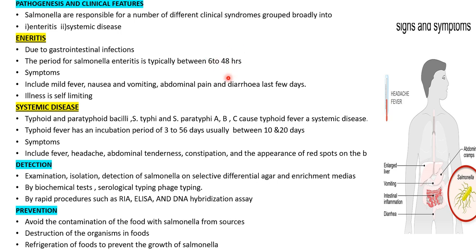Symptoms of enteritis include mild fever — which is the body's first defense indication — nausea, vomiting sensation, vomiting, abdominal pain, and diarrhea lasting a few days. The illness is usually self-limiting but can be more severe in susceptible groups. Generally the patient recovers within a few days, but in some cases the condition can be severe, with intestinal upset being the major factor.